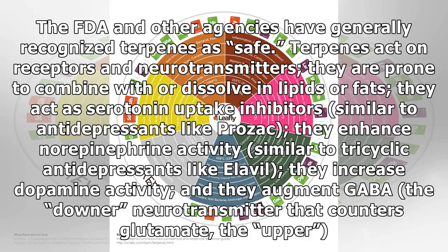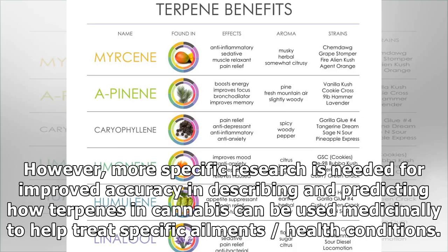The FDA and other agencies have generally recognized terpenes as safe. Terpenes act on receptors and neurotransmitters; they are prone to combine with or dissolve in lipids or fats. They act as serotonin uptake inhibitors similar to antidepressants like Prozac, enhance norepinephrine activity similar to tricyclic antidepressants like Elavil, increase dopamine activity, and augment GABA — the downer neurotransmitter that counters glutamate, the upper.